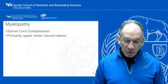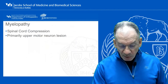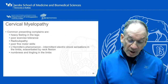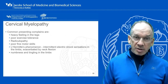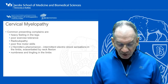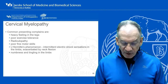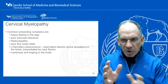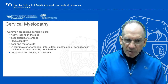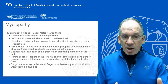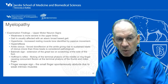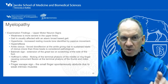Myelopathy — a quick review. Spinal cord compression is primarily an upper motor neuron lesion. Cervical myelopathy usually presents as a heavy feeling in the legs, poor exercise tolerance, radiculopathy, poor fine motor skills, Lhermitte's phenomenon — which is intermittent electric shocking sensations in the limbs exacerbated by neck flexion — and numbness and tingling in the limbs. With any neurologic problem, when you compress that structure you can recreate the symptoms. Many things done on physical examination are to replicate what happens to the patient at maximal symptoms. Save the noxious part of your examination for the end, and don't repeat a pain-producing maneuver.